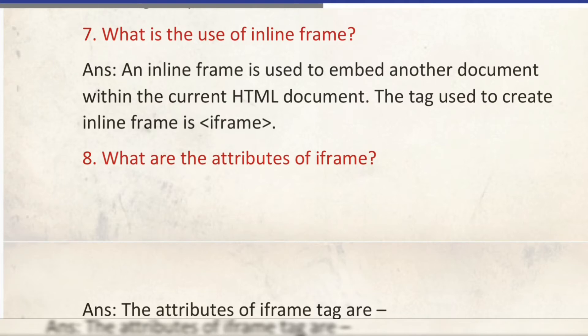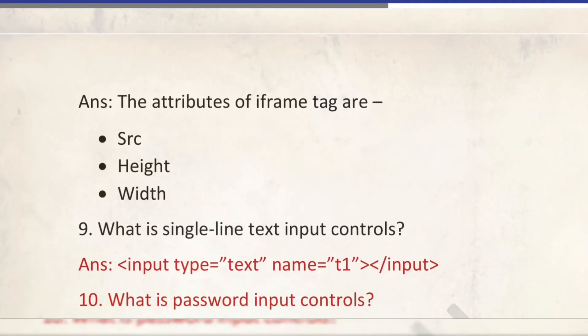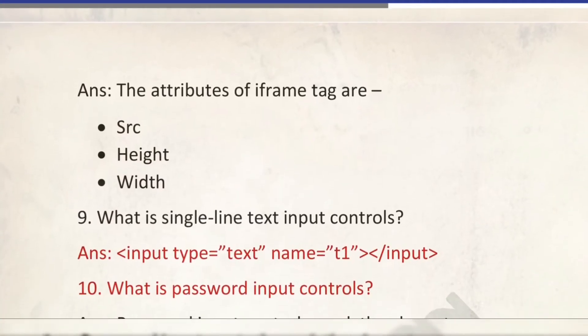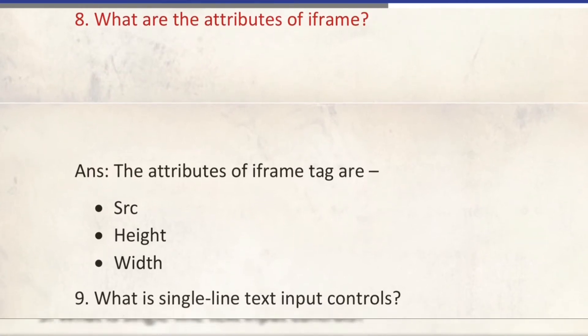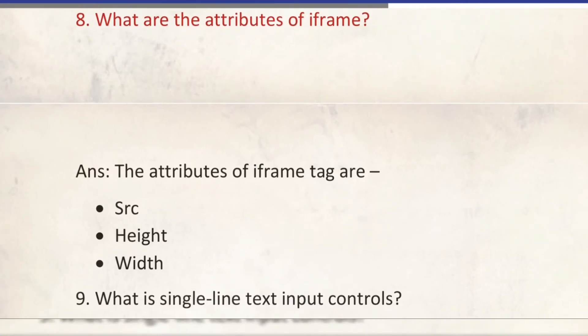What are the attributes of iframe? These are src, height, and width. If it is for 3 marks you can also write the definitions: src signifies the source of the frame, height signifies the height of the frame, width signifies the width of the frame.